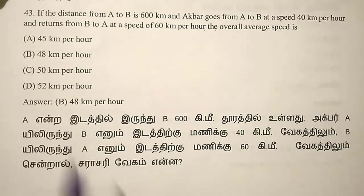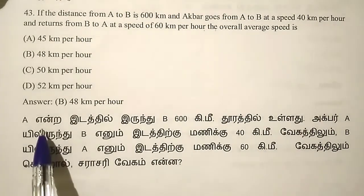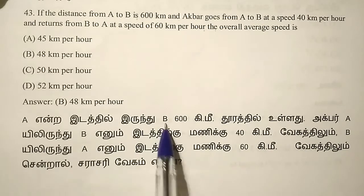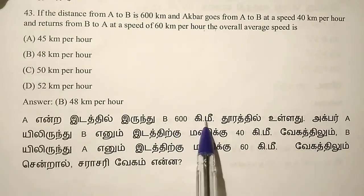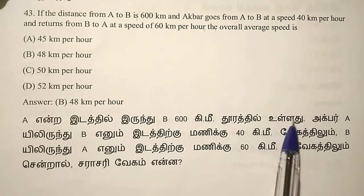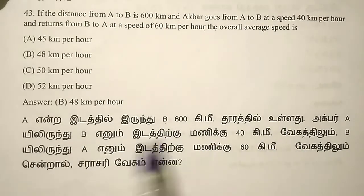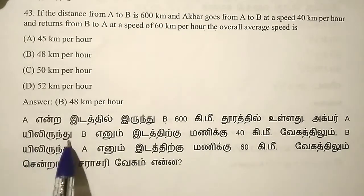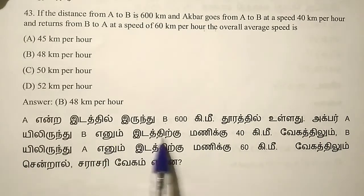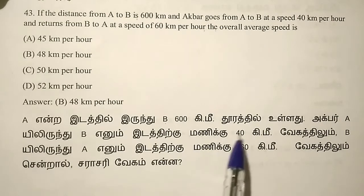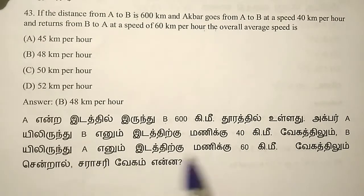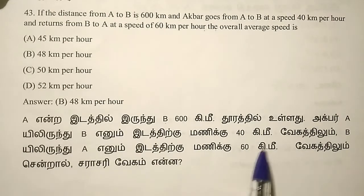If you look at the speed from A to B: the distance A to B is 600 km, speed A to B is 40 km per hour, and B to A is 60 km per hour.